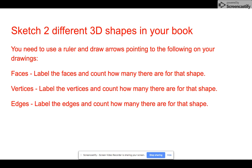I'm asking you to sketch two different 3D shapes in your book. You need to use a ruler and draw arrows pointing to the following on your drawings. I want you to clearly label the faces and tell me how many faces you've got on your 3D shape.